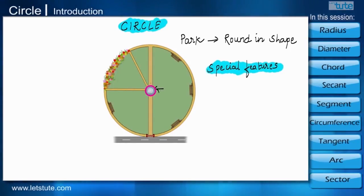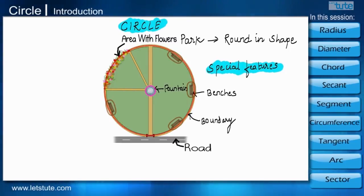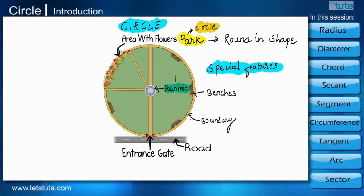Firstly, there is a fountain exactly in the center of the park and benches are put around the boundary of the park. Here, we can see that the park is a circle and the fountain is in the center of the circle and the benches are on the boundary of the park which is equidistant from the fountain.